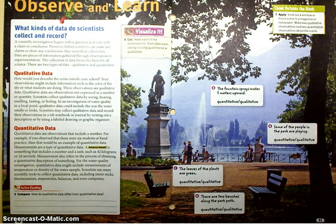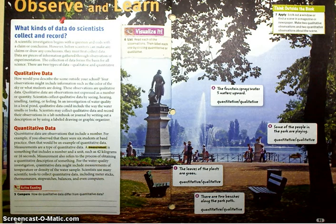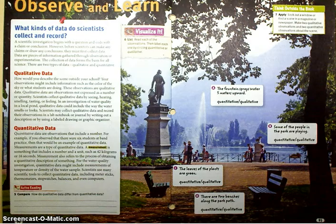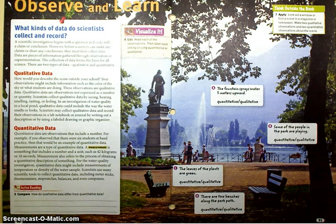How would you describe the scene outside your school? Your observations might include information such as the color of the sky or what students are doing. These observations are qualitative data.